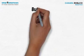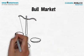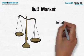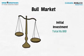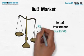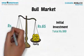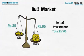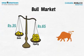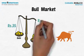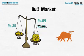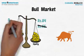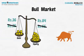Let us take a scenario where one invests Rs.100 in a balanced fund. So Rs.65 of that goes into equity and Rs.35 into debt. When the equity market does well, say the value of equity investments moves from Rs.65 to Rs.84 and debt investments to Rs.36.